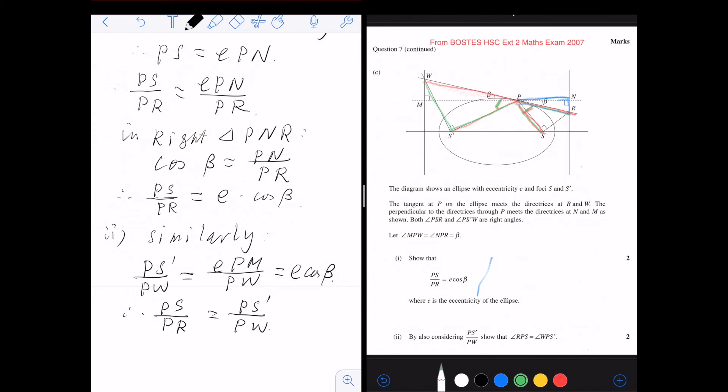And then PS dash over PW is actually equal to cos this angle because this is a right angle. So then by using this sentence here, we can say therefore angle RPS is equal to angle WPS dash. Proved. Therefore, we prove the reflection property.